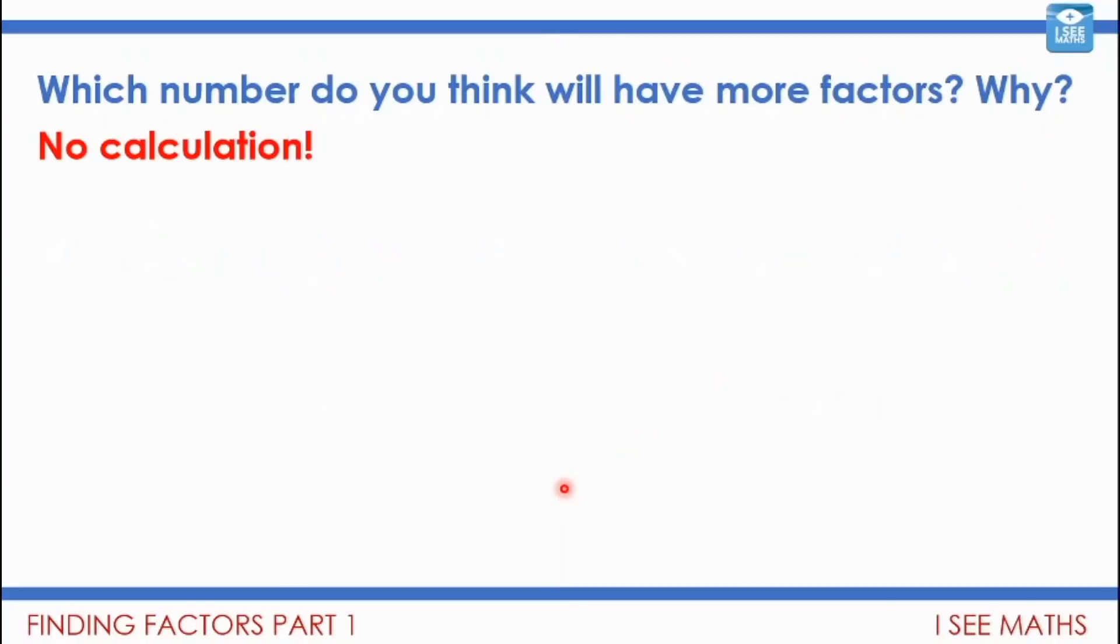Now, I've got a slightly unusual challenge to finish with, which is this one. Which number do you think will have more factors? And why? And no calculations allowed. Okay? So I'm going to bring up two numbers. I just want you to look at them and think, which one do I think will have more factors? Now, you can pause the video if you want to. But remember that rule. No calculation. I just want you to see if you can explain why you think one number has more factors than the other one. Have a look at them. They are 80 and 85. Well, what do you think?